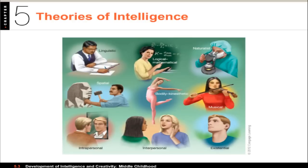Howard Gardner is best known for his theory of multiple intelligences, and here we have nine of them: linguistic, which is standard verbal; logical-mathematical; naturalist, like someone who knows all the plants and how to work with them; spatial, shown here with a sculptor; bodily-kinesthetic; and musical. These are considered distinct intelligences.